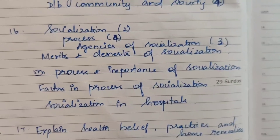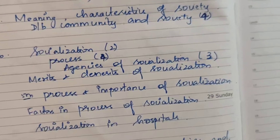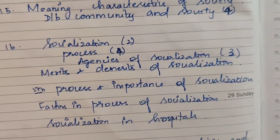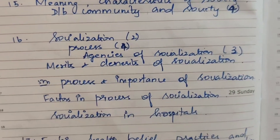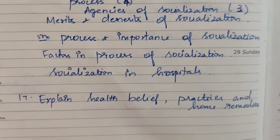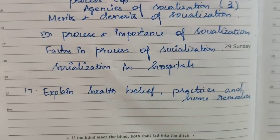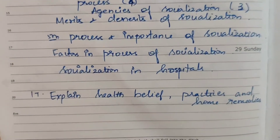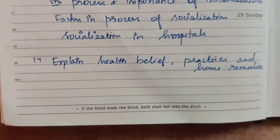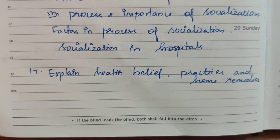Sixteenth question: Socialization — asked 2 times. Process of socialization — asked 4 times. Agencies of socialization — asked 3 times. Merits and demerits of socialization — asked once for 15 marks and 5 marks. Process and importance of socialization, factors in process of socialization, and socialization in hospitals are also asked. Seventeenth question: Explain health beliefs, practices, and home remedies.